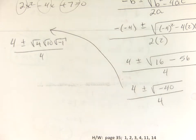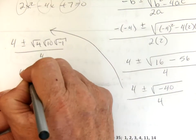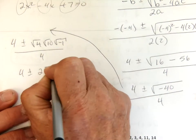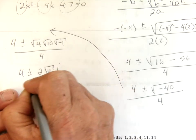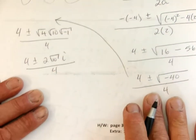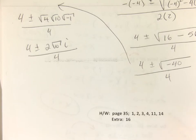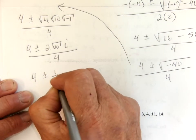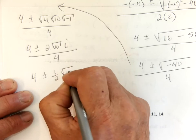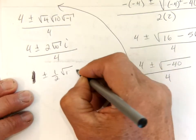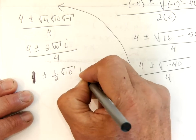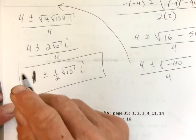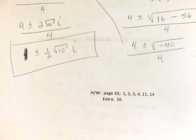So it's divisible? Yeah, we can take the square root of 4. So I've got 4 plus or minus 2 square roots of 10 i over 4, which is going to be 1 plus or minus 1 half square roots of 10 i. There we go.